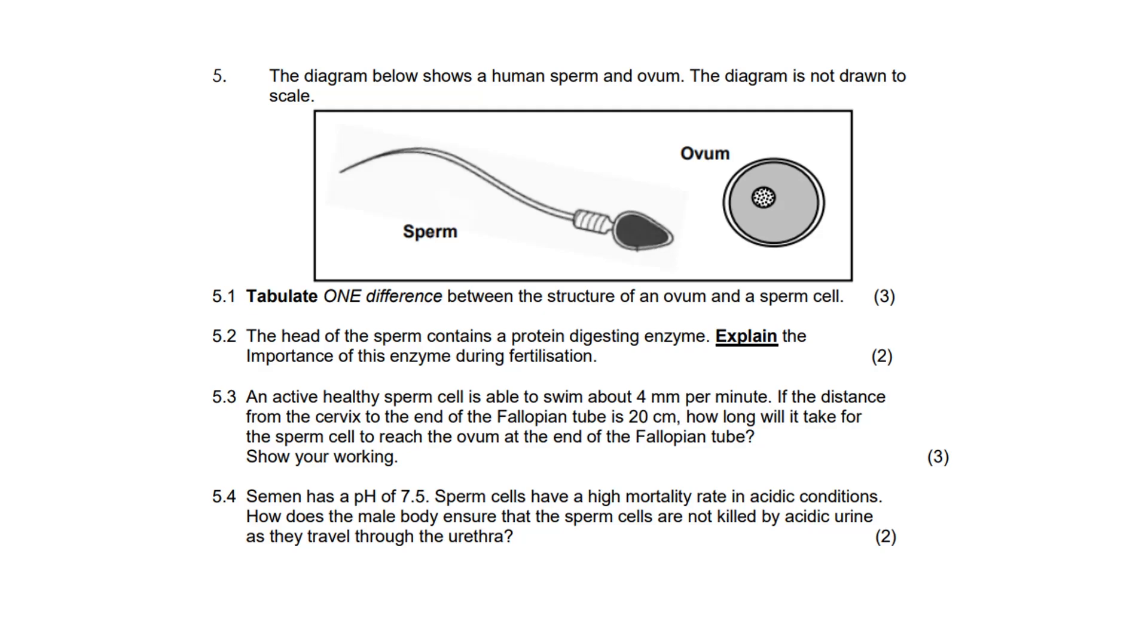Tabulate one difference between the structure of an ovum and a sperm cell. Well, ovum has no tail and no mitochondria. The sperm cell contains a tail for transport, and the midpiece contains many mitochondria.